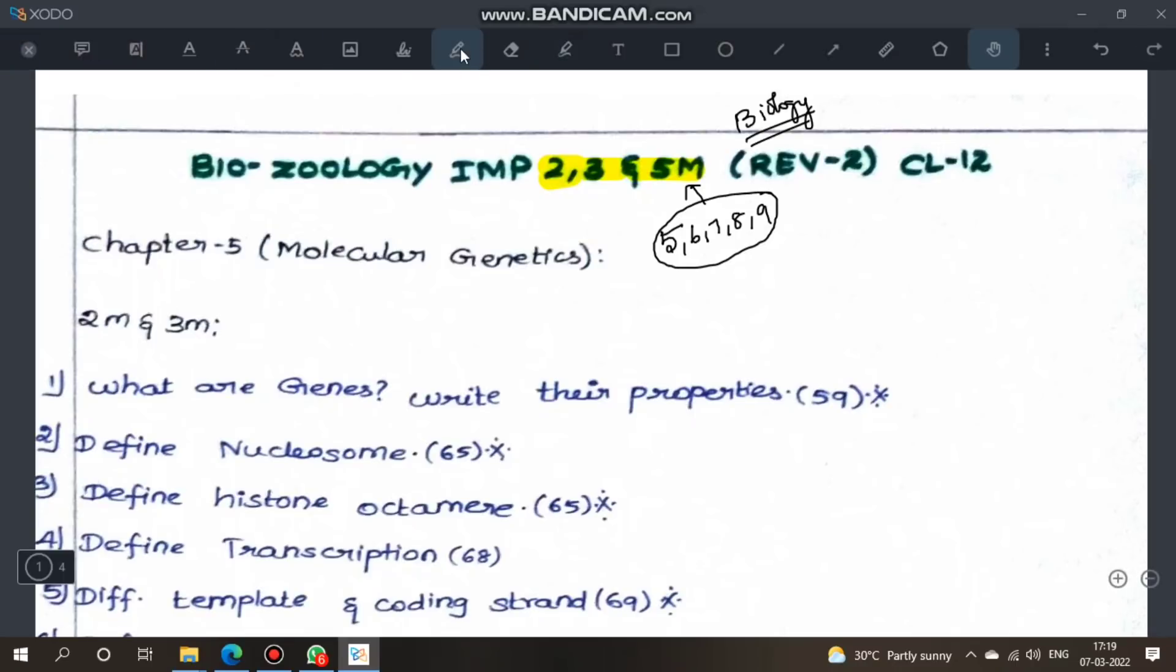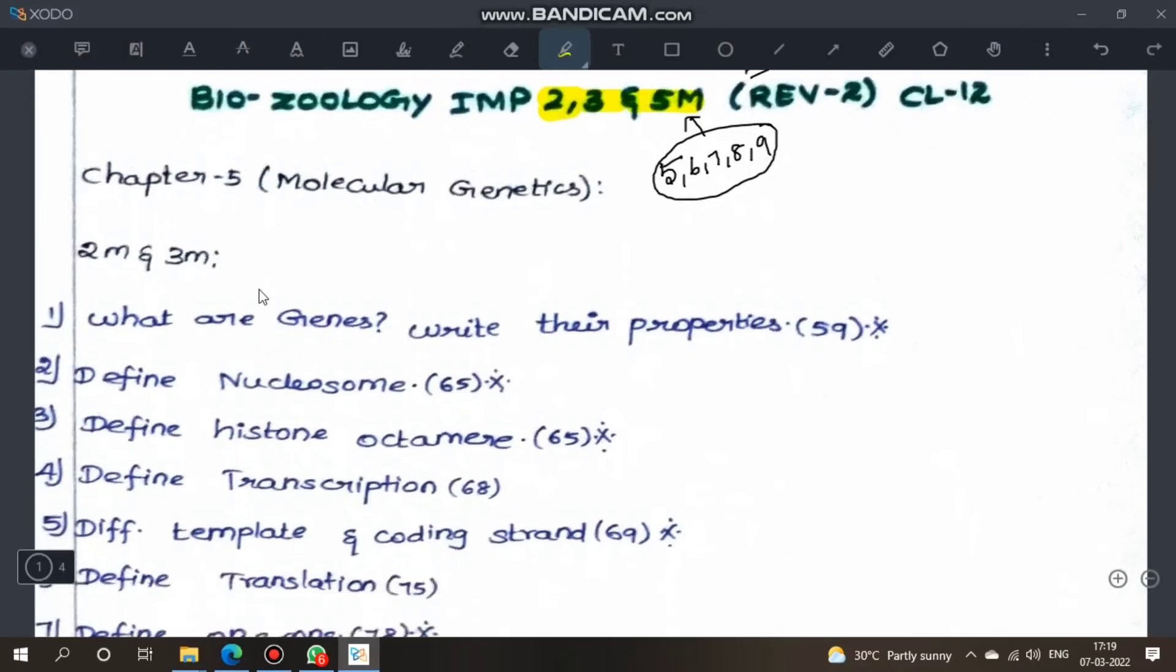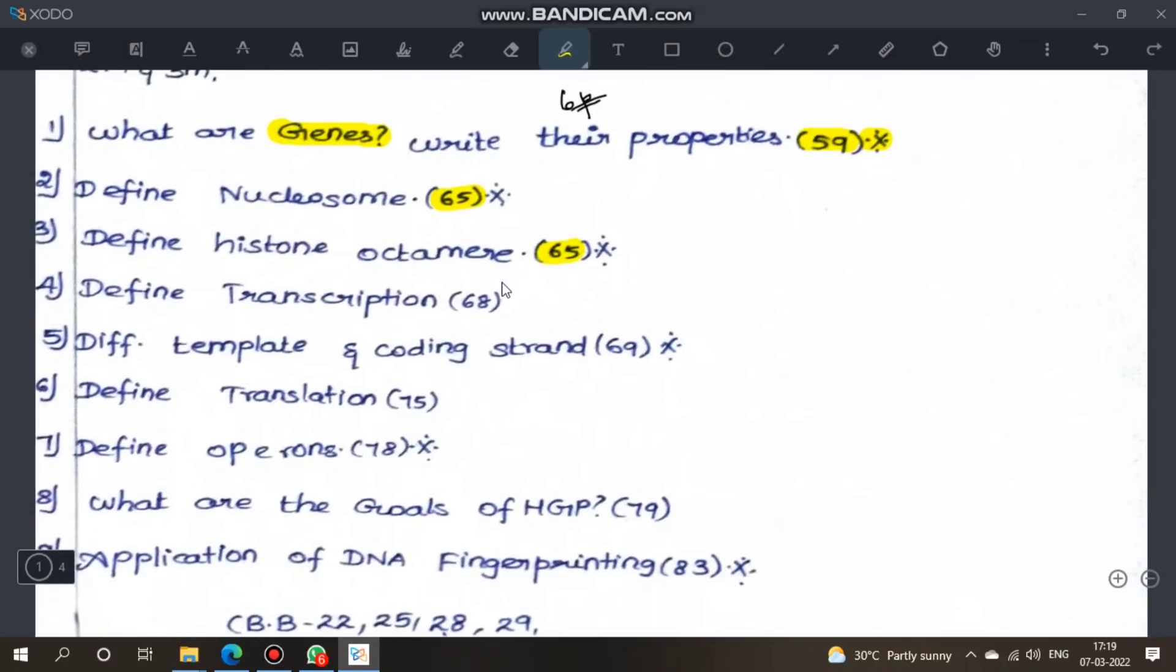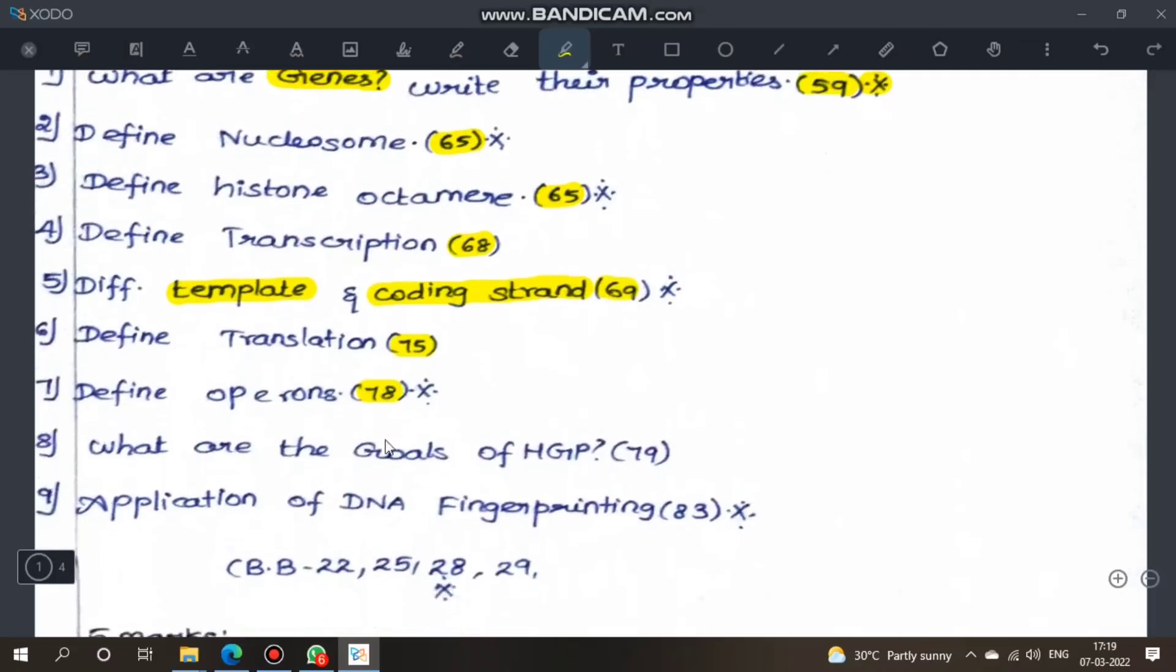First, Chapter 5 Molecular Genetics. Two marks and three marks: First, what are genes and their properties, page 59, very important question. Second question, define nucleosome, page 65. Define histone octamer, page 65. Define transcription, page 68. Differentiate template and coding strand, page 69. Define translation, page 75. Define operons, page 78, very important.